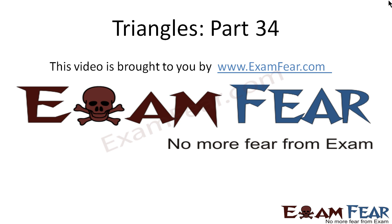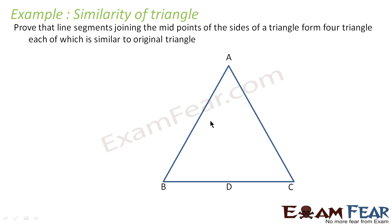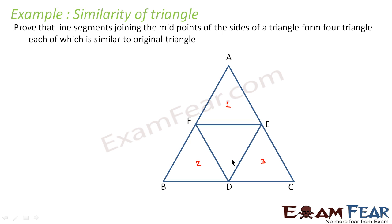please make sure that you have watched part 1 to part 33. For this example of similarity of triangles, prove that the line segment joining the midpoints of the sides of a triangle forms 4 triangles, each of which is similar to the original triangle. We take triangle ABC with midpoints D, E, and F, and draw a triangle from these midpoints. The four triangles formed are: Triangle 1: AFE, Triangle 2: FBD, Triangle 3: FDC, and Triangle 4: DEF. We have to prove that all these triangles are similar to the original triangle ABC.